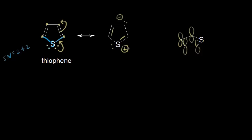We can analyze the sulfur in terms of its steric number in the resonance structure: two sigma bonds plus now only 1 lone pair of electrons gives a steric number of 3. So now we can see that it's actually sp2 hybridized. It has three sp2 hybrid orbitals — one of those contains the lone pair of electrons, and the other two form bonds with the carbons. Since it's sp2 hybridized, it also has an unhybridized p orbital, and I can go ahead and draw in that unhybridized p orbital. I can think about one of those lone pairs of electrons on the original dot structure as occupying a p orbital.